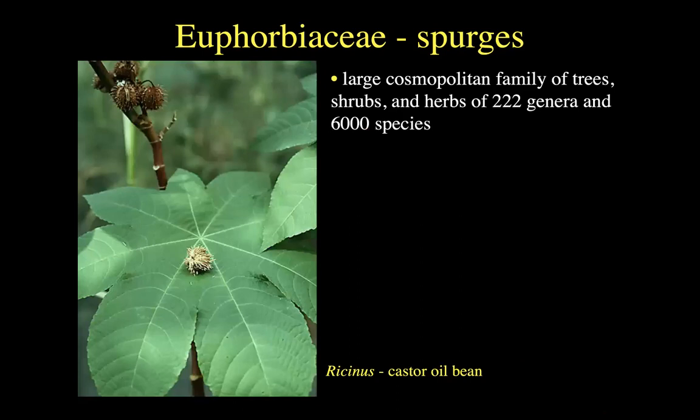Now we move on to the Euphorbiaceae, the spurge family. This is a very important family globally — lots of trees and shrubs, particularly in the tropics, particularly in highly xeric conditions. In the new world deserts, you might think of the cactus family. In the old world, particularly in Africa and the Mediterranean, the big family that is cactus-like is the Euphorbiaceae. Lots of cool convergent evolution going on in the Euphorbiaceae.